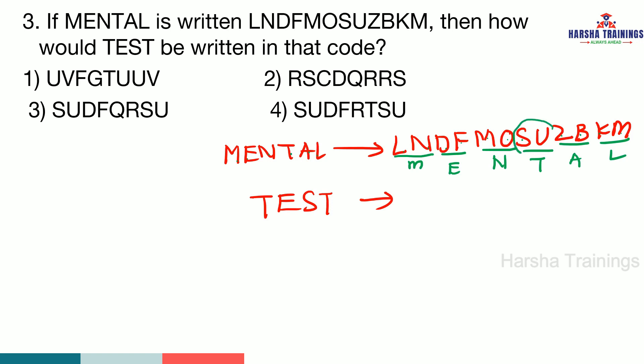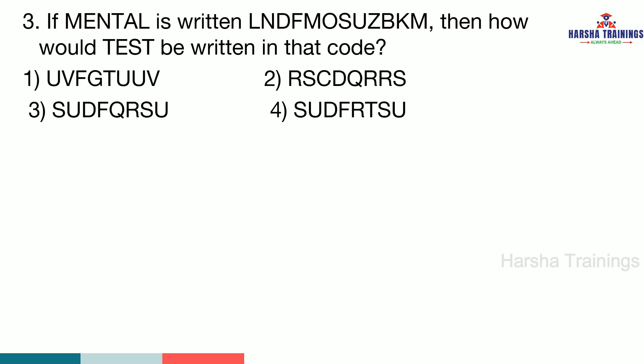Applying this to TEST: T→SU, E→DF, S→RT (letters before and after S). Option verification — SU appears in only two options. Checking the next pair DF eliminates more options. Then checking RT confirms the answer. So the answer is SUDFRT.